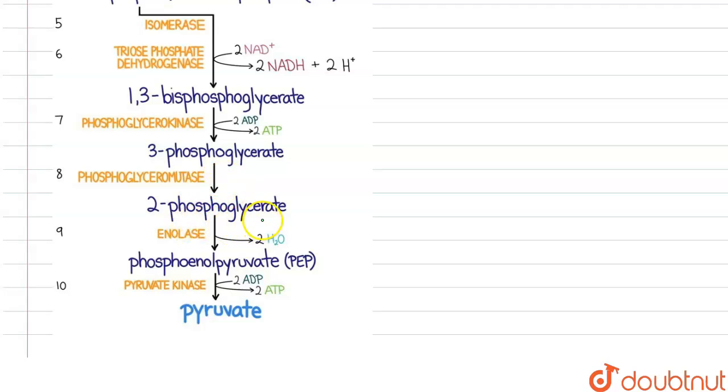After that, we have the formation of 2-phosphoglycerate molecules. Then we have PEP, phosphoenolpyruvate, with the help of enolase. And then we have pyruvate kinase which will act on the PEP, and finally we will get two molecules of pyruvate.